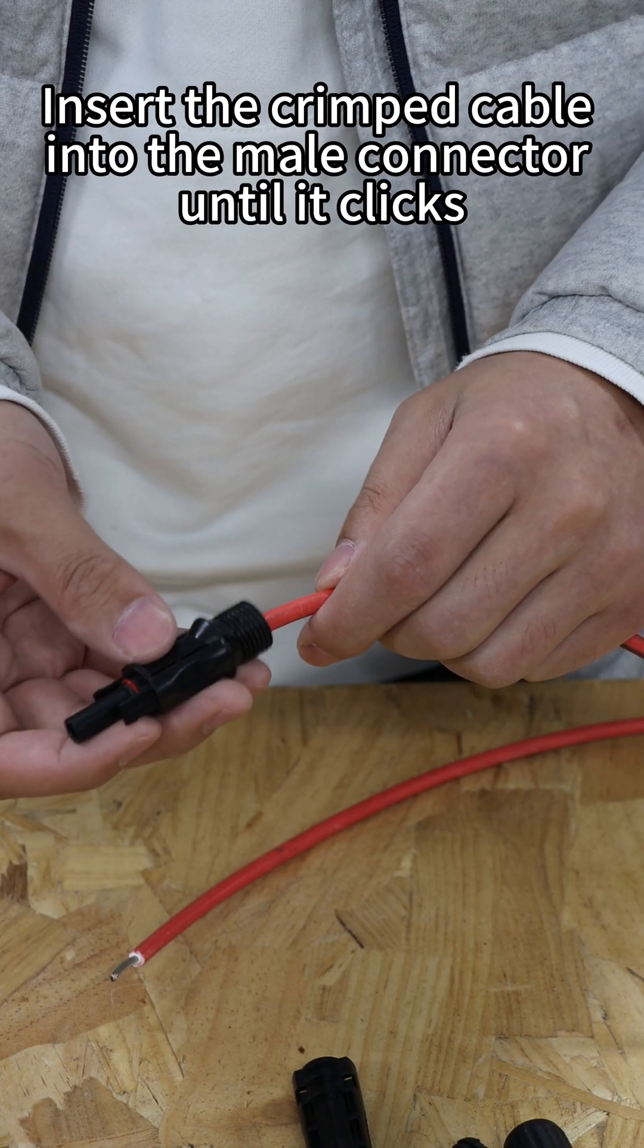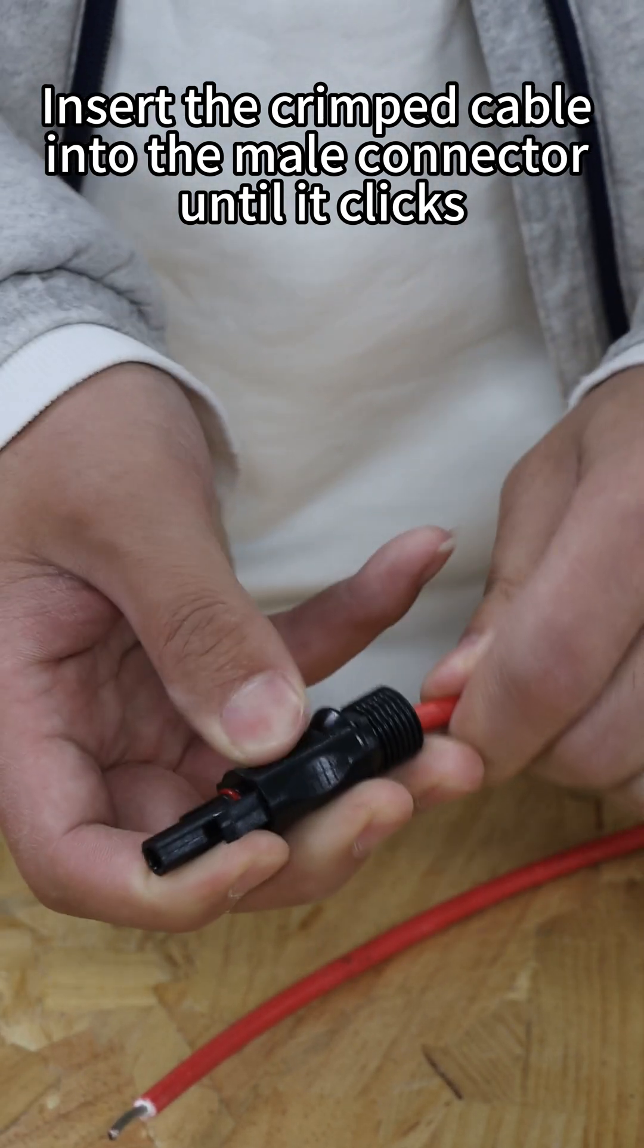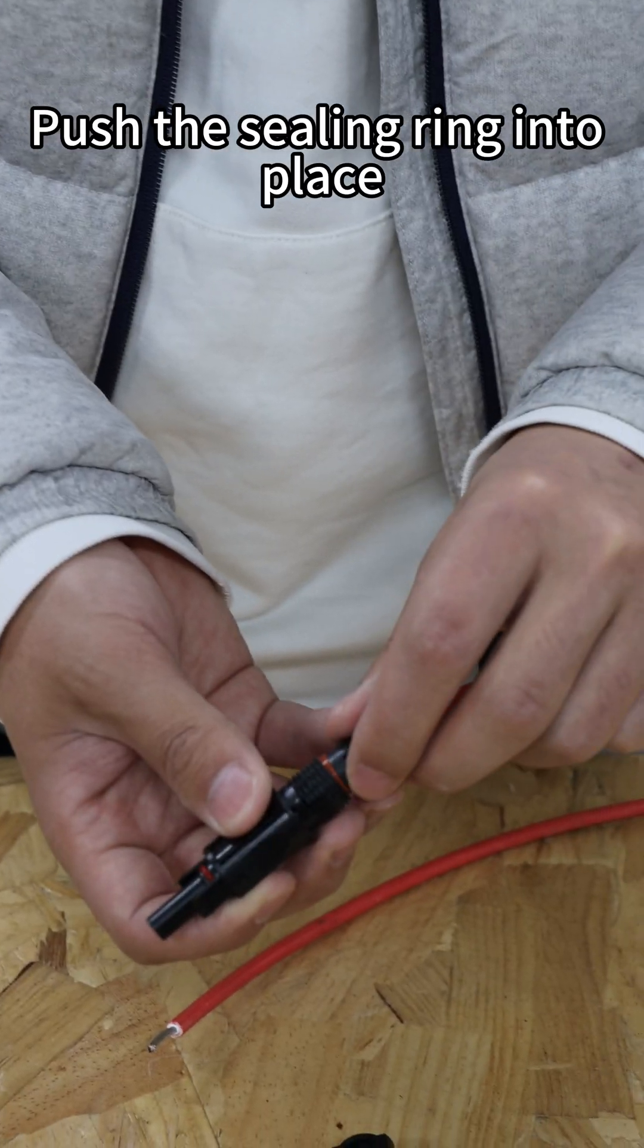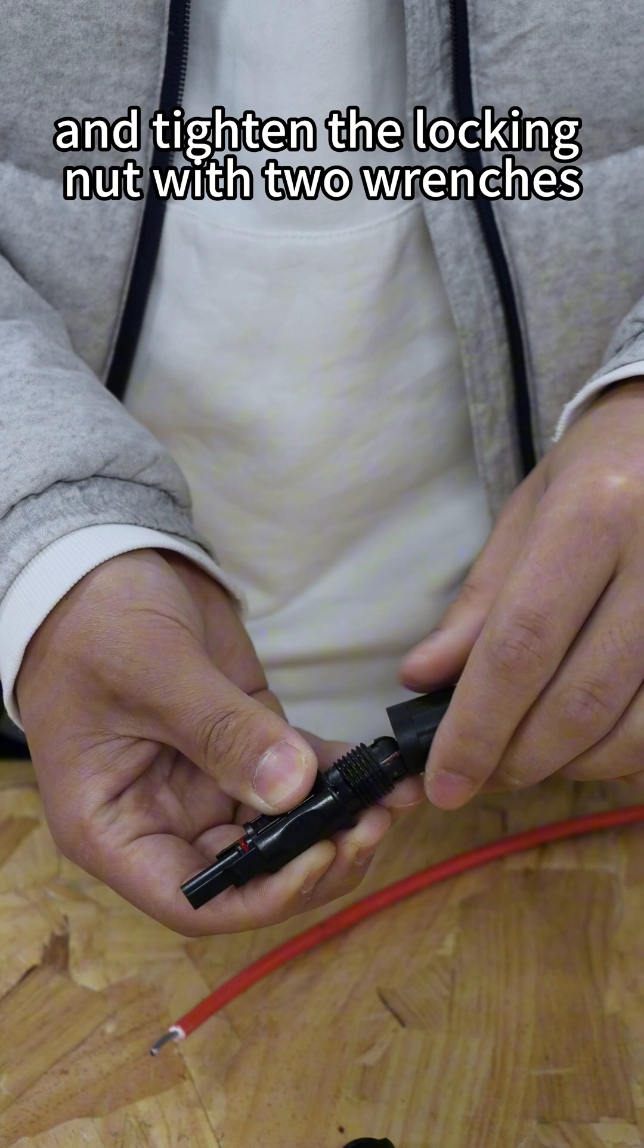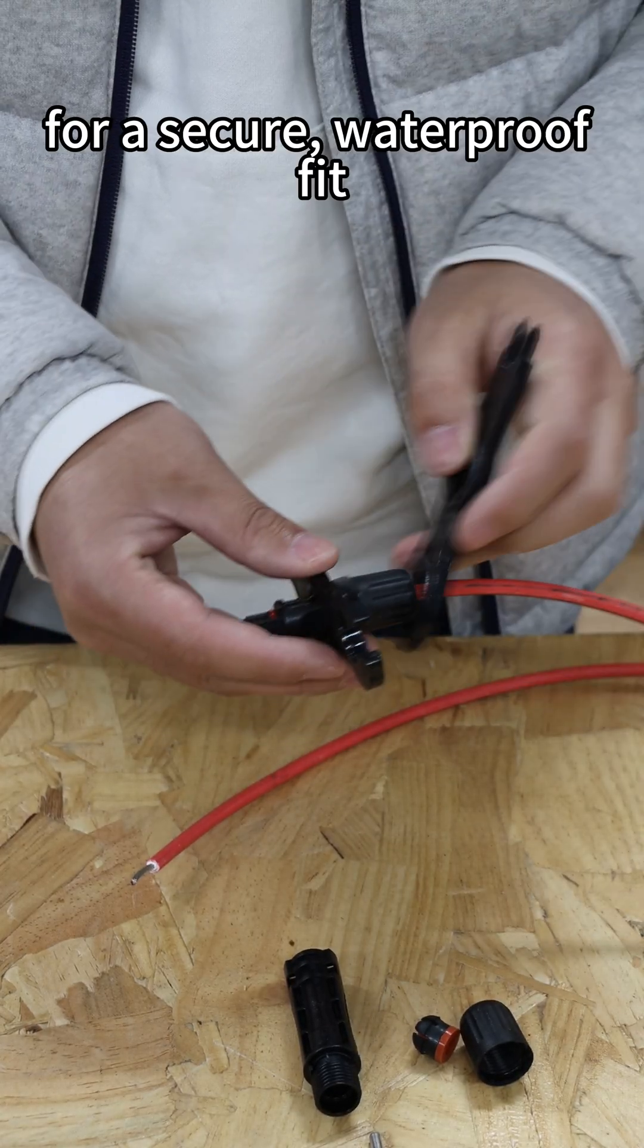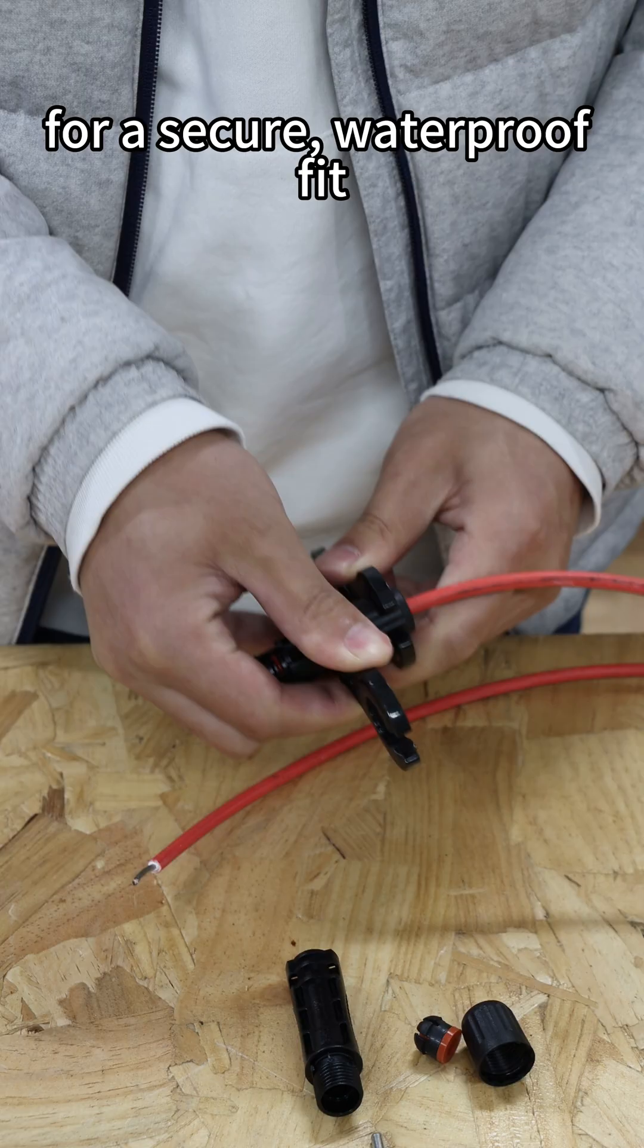Insert the crimped cable into the male connector until it clicks. Push the sealing ring into place and tighten the locking nuts with two wrenches for a secure waterproof fit.